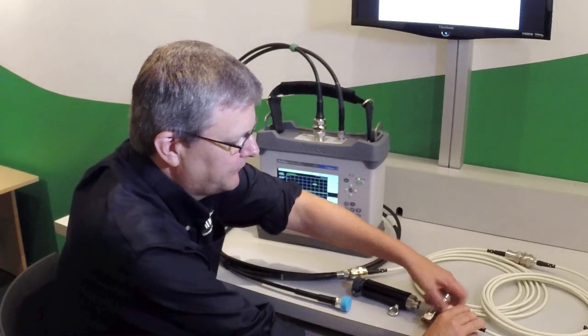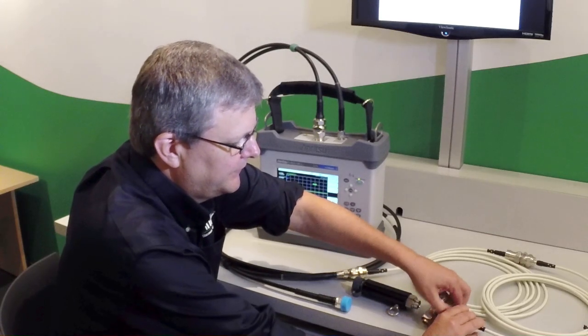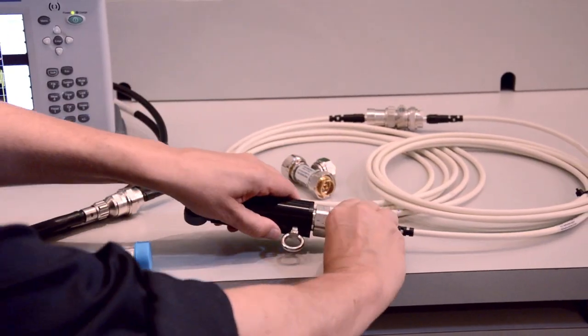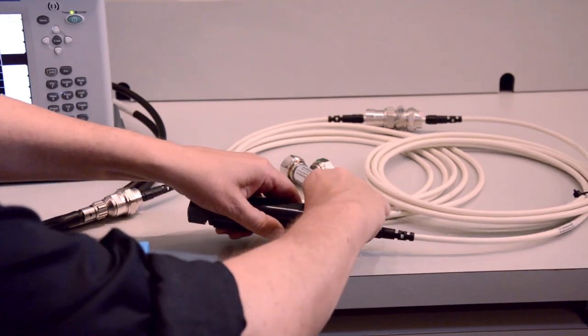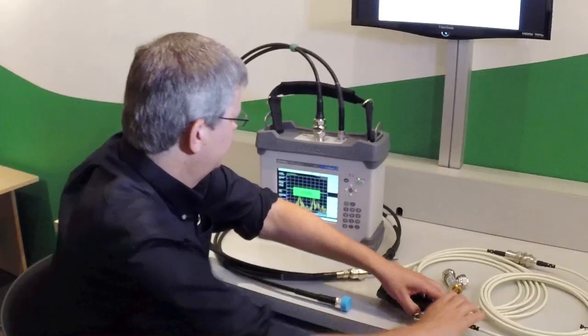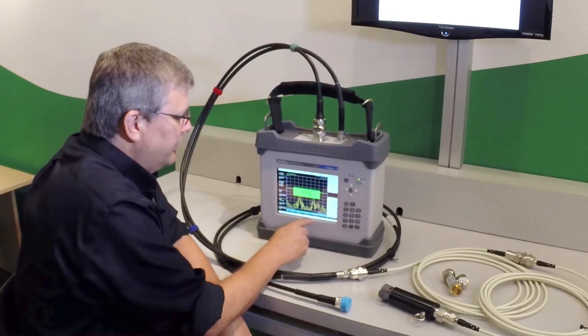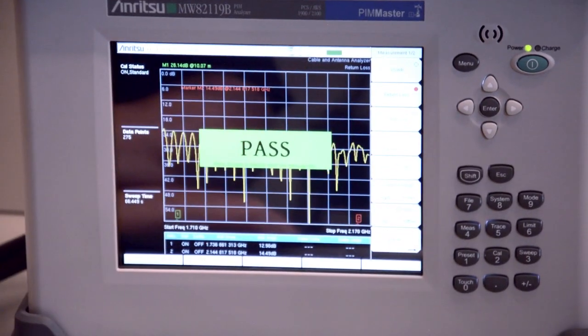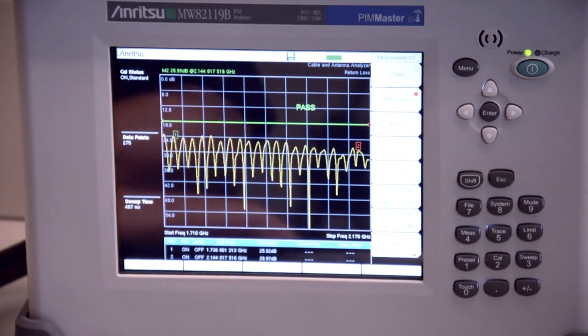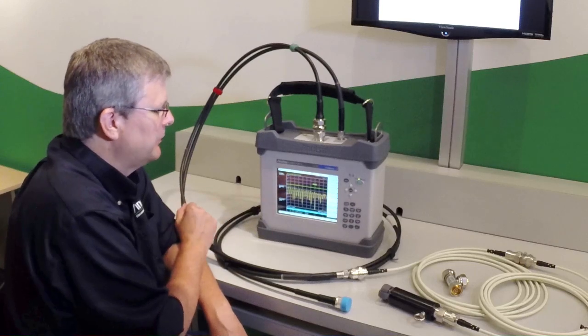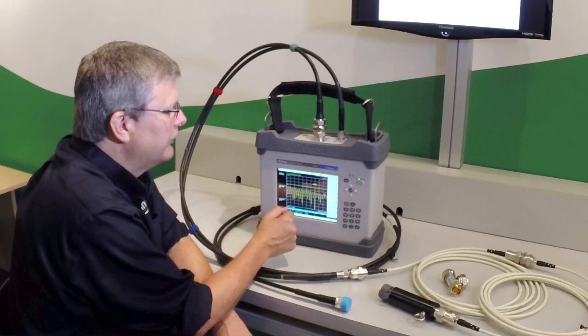The final thing we're going to do is connect the actual antenna, or in this case our low PIM termination, to the end of the line and do final verification measurements. We're going to go into measurements return loss, and once again the return loss of the overall system now looks very good. So this is the measurement we're going to save as the final system measurement.